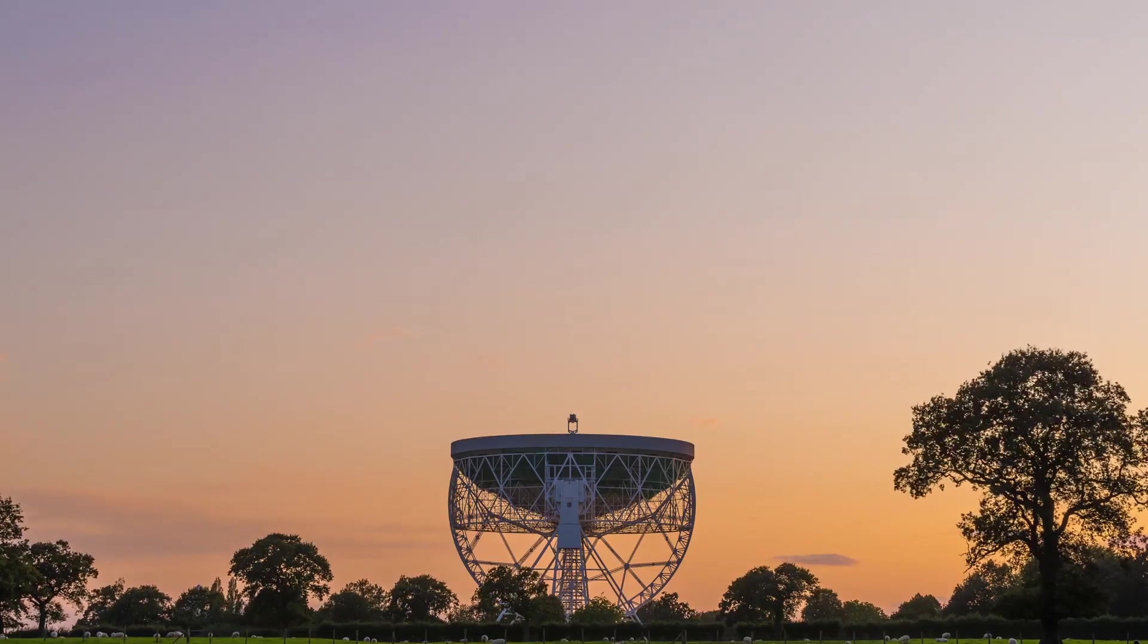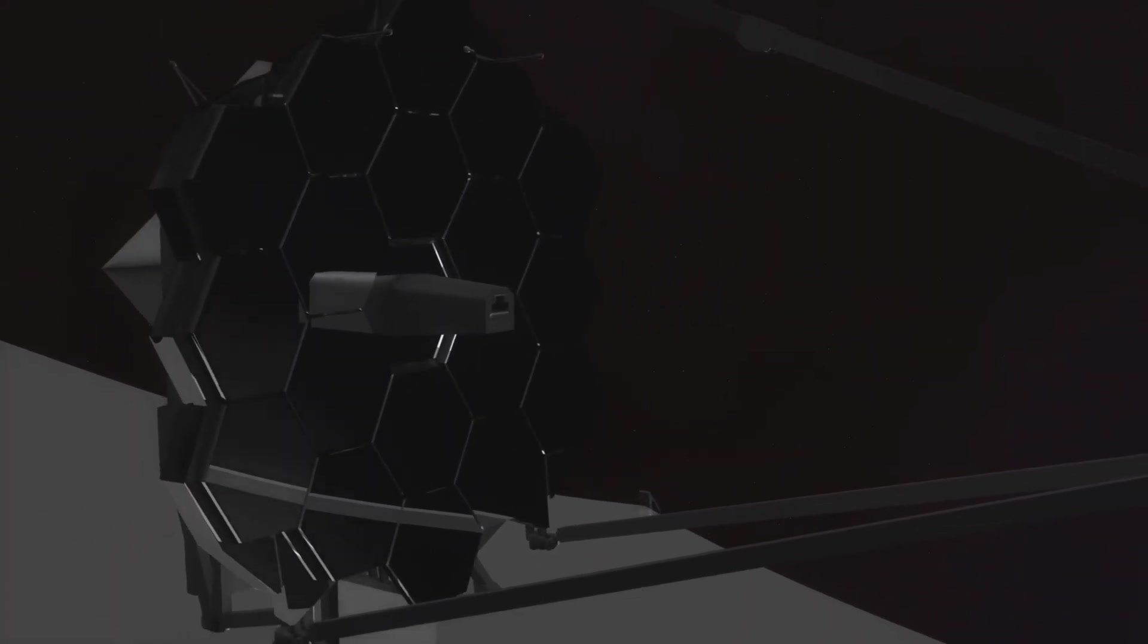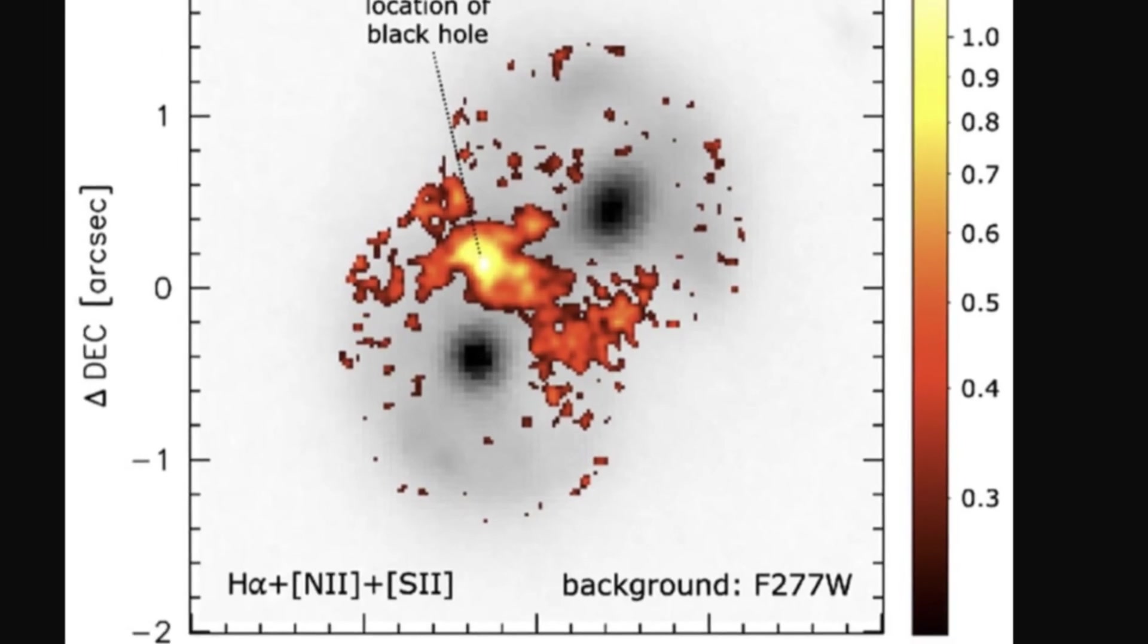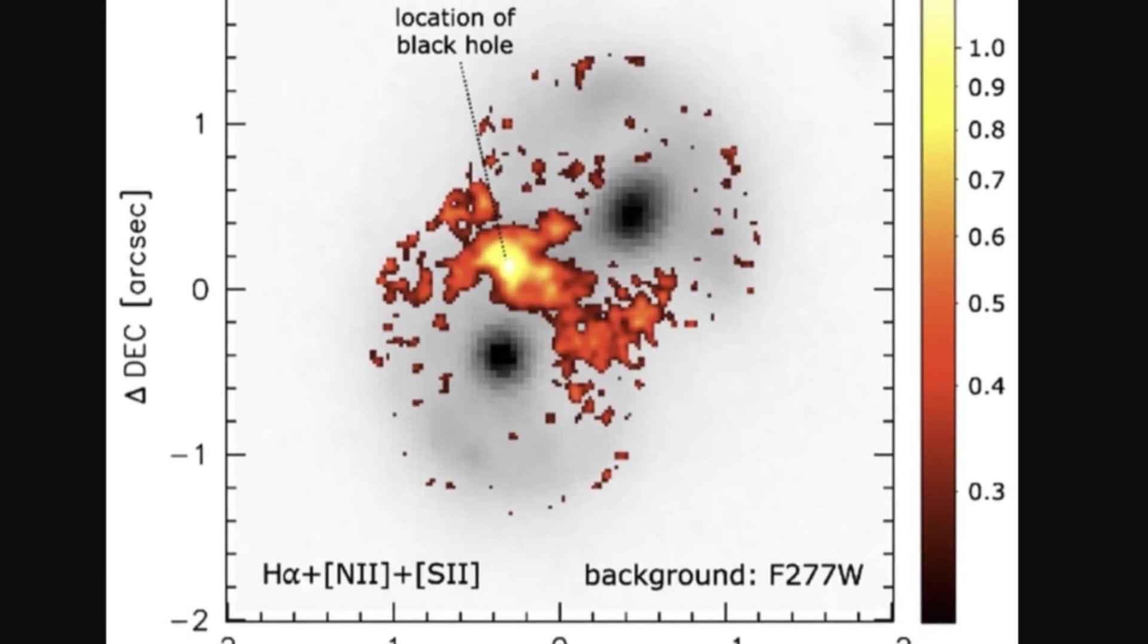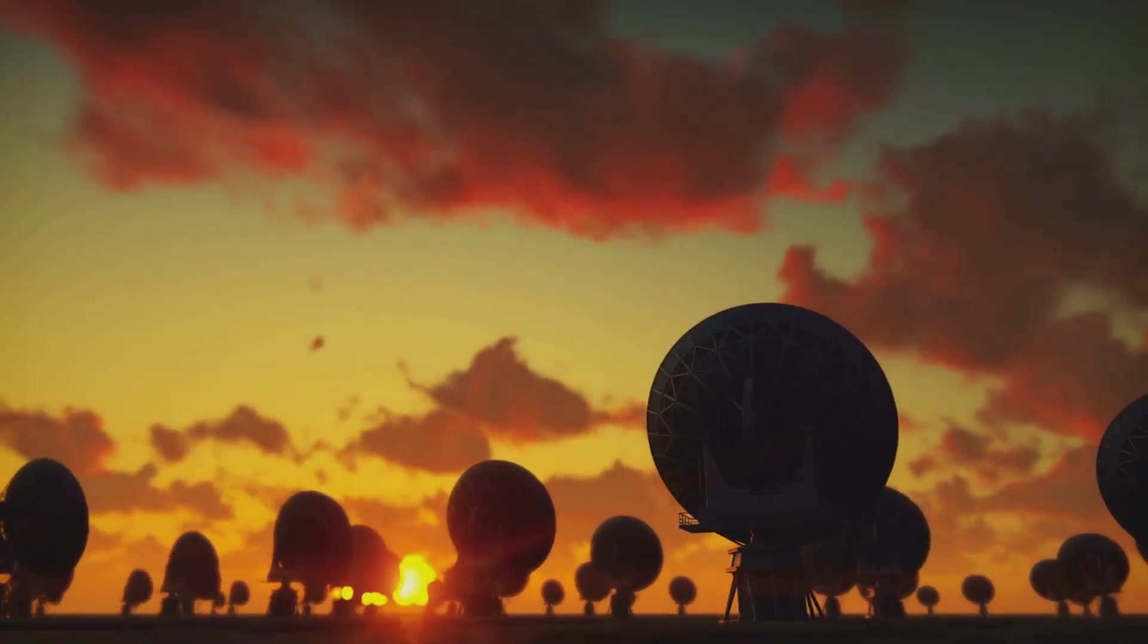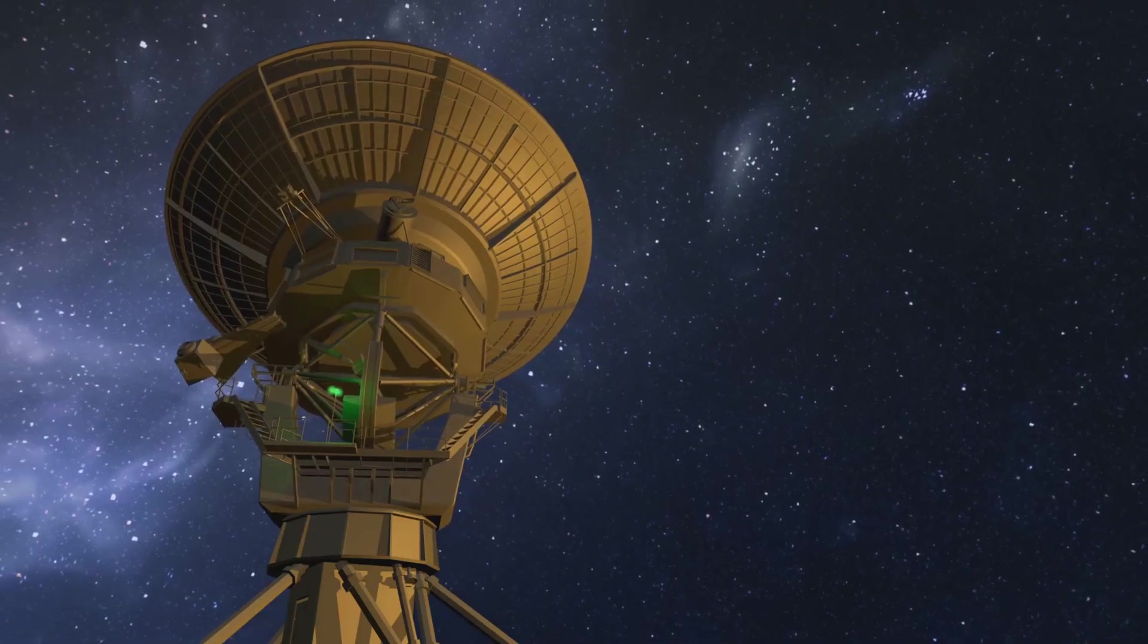To confirm their discovery, astronomers used multiple telescopes to gather more evidence. NASA's Chandra X-ray Observatory detected powerful X-rays from the black hole's location, proving it's actively feeding. The very large array picked up radio signals, another sign of a growing black hole.